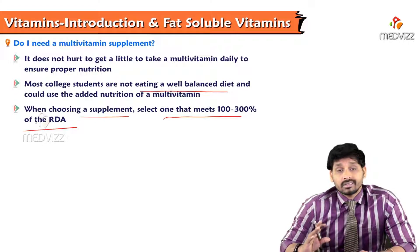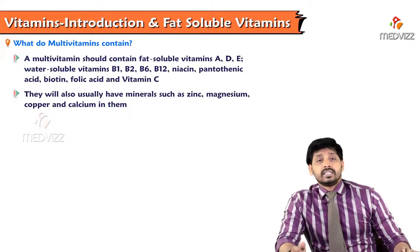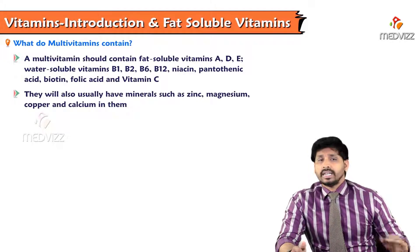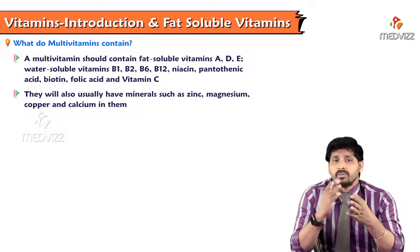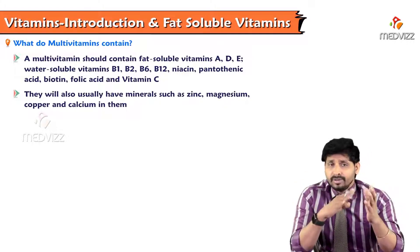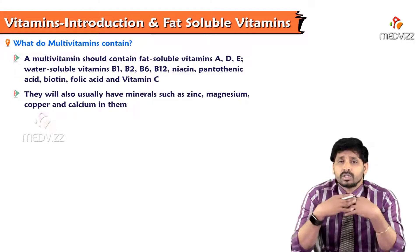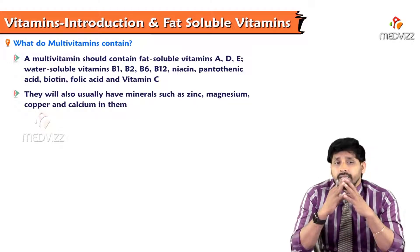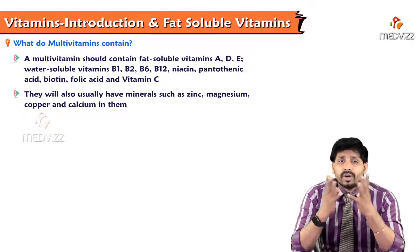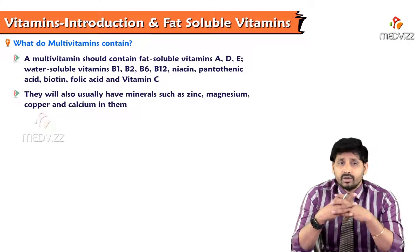When choosing a supplement, select one that meets 100 to 300 percent of the required daily allowance. Multivitamins contain fat soluble vitamins like A, D, and E, and water soluble vitamins like B1, B2, B6, B12, niacin, and pantothenic acid — which are mostly energy-releasing vitamins required for energy-producing metabolic pathways.